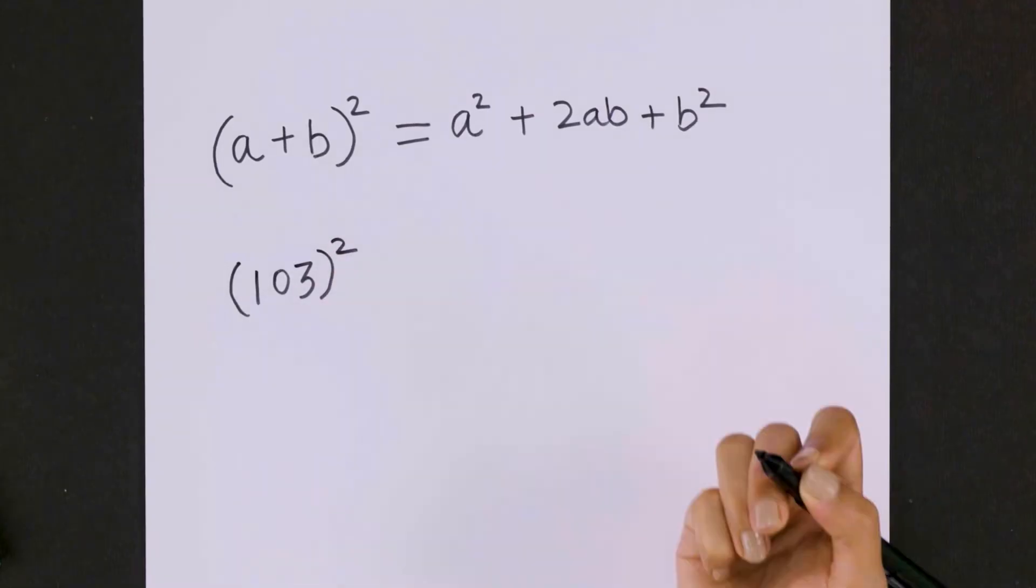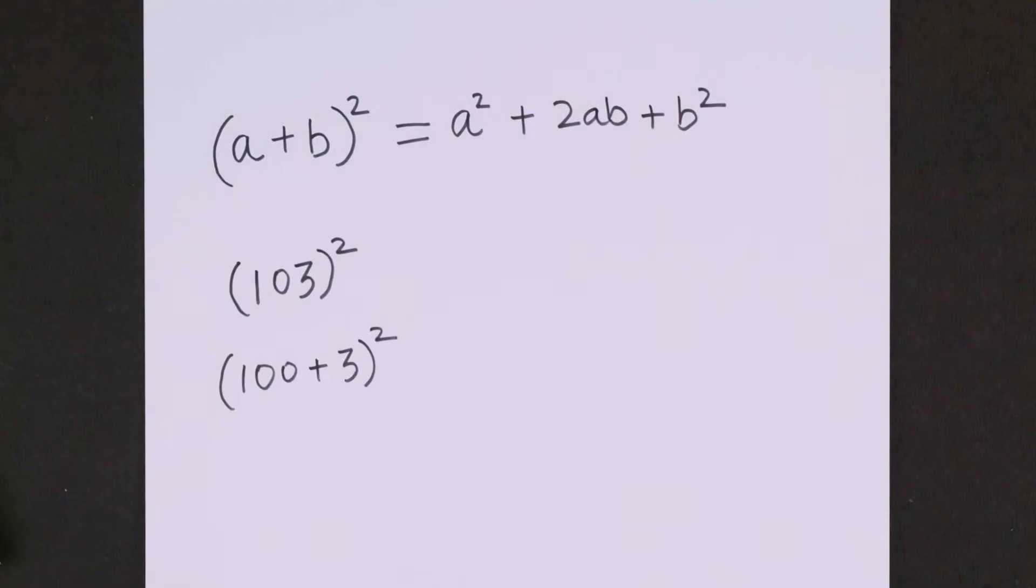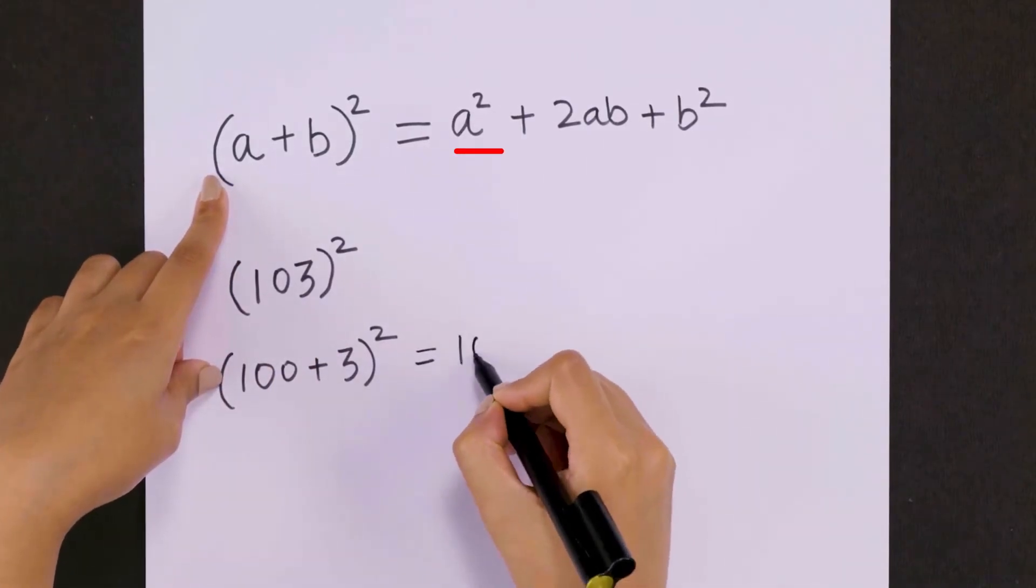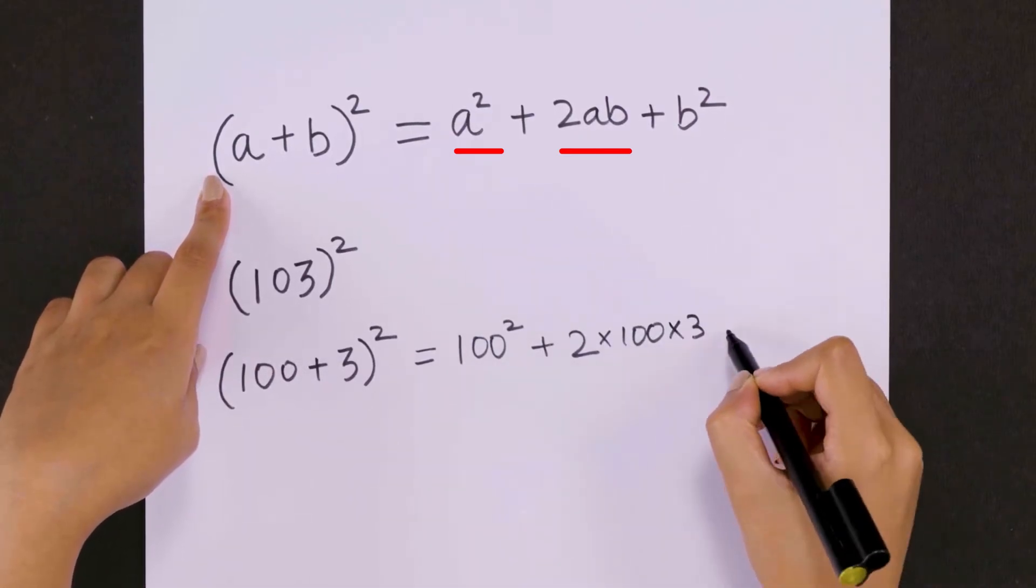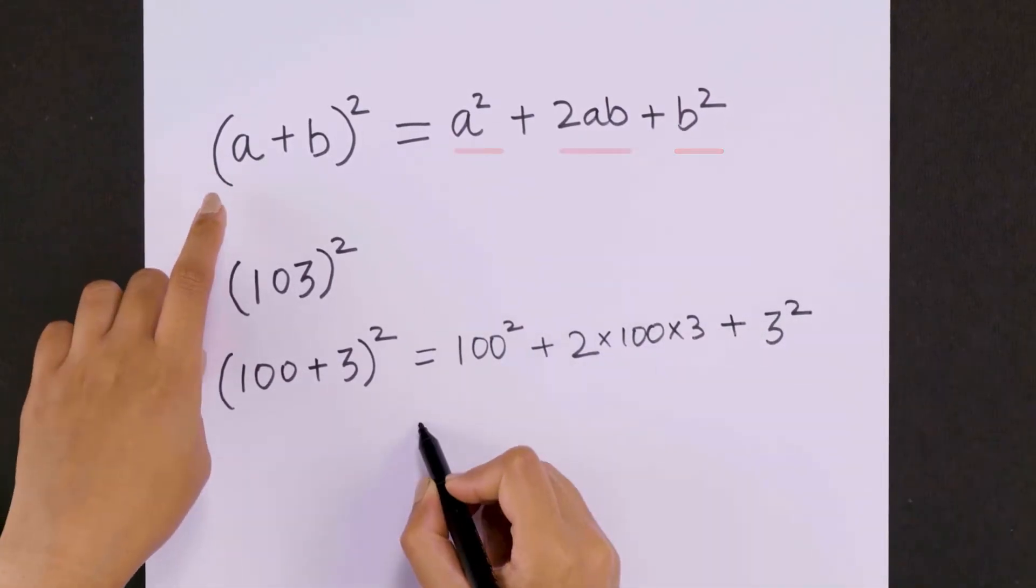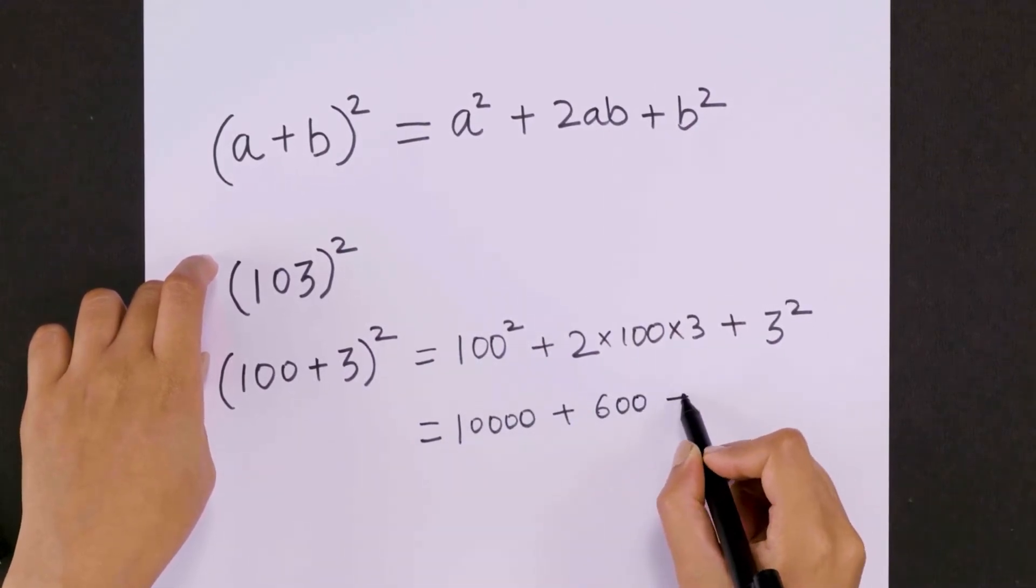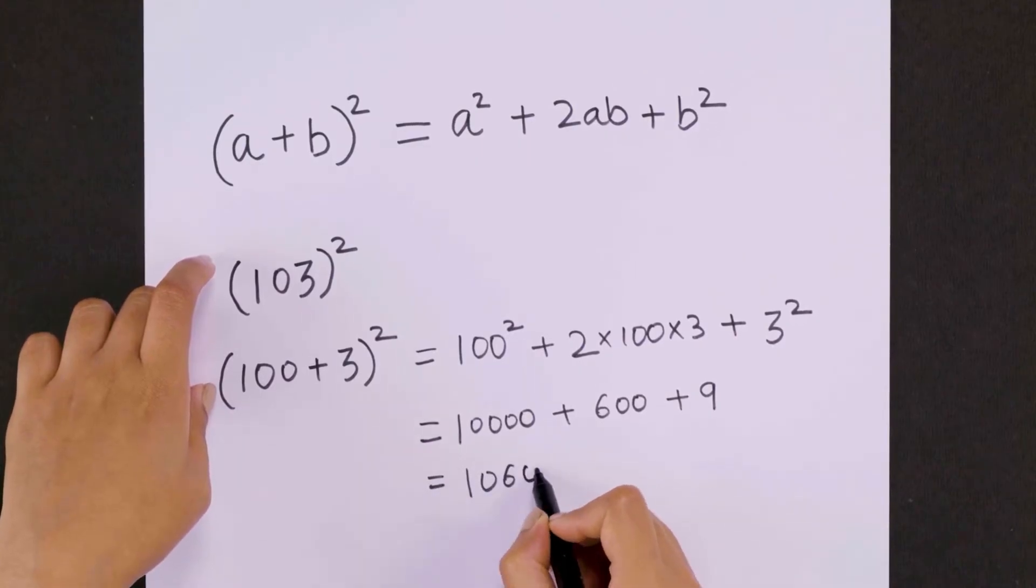For example, we can write 103 whole squared as 100 plus 3 whole squared. Using this identity, we get 100 squared plus 2 times 100 times 3 plus 3 squared, which equals 10,000 plus 600 plus 9. Adding these, we get 10,609.